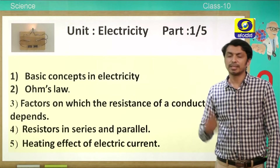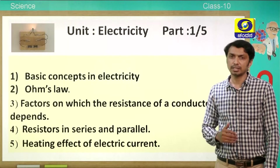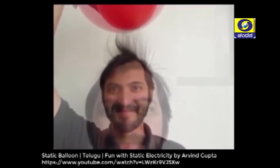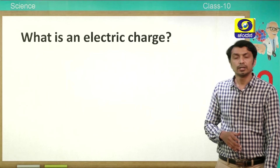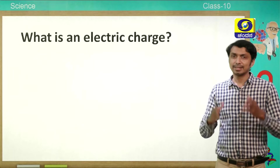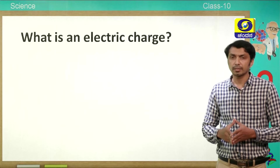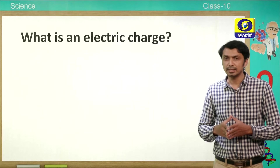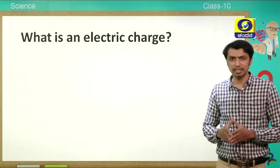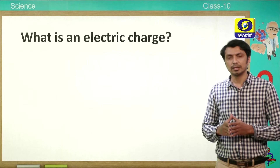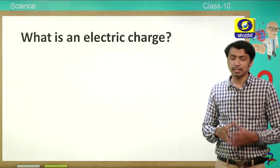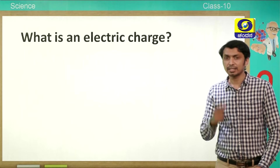It is very difficult to imagine the world without electricity. To understand it, let us watch this activity. Children, you just watched this activity. What is the reason for the hairs to get attracted? It is the charges present in the balloon that attract the hairs. This is what we call static electricity.